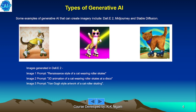Some examples of Generative AI that can create imagery include DALL-E 2, MidJourney and Stable Diffusion. These are some of the examples which you can see in images 1, 2 and 3.